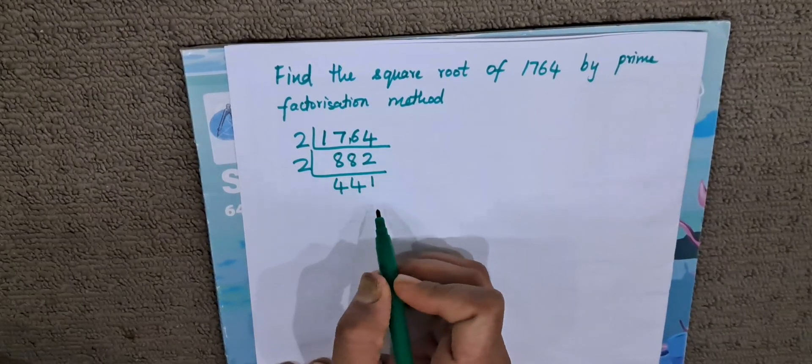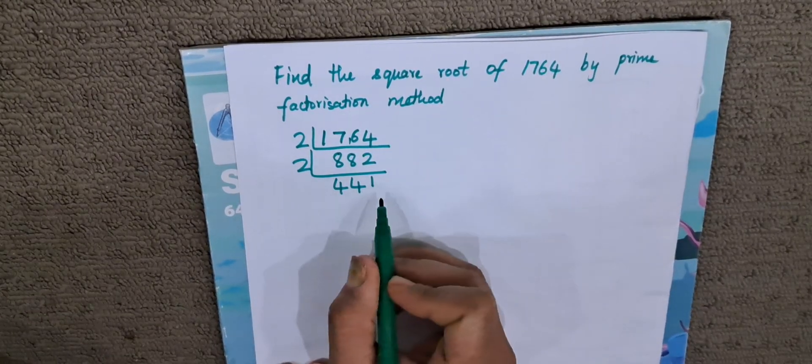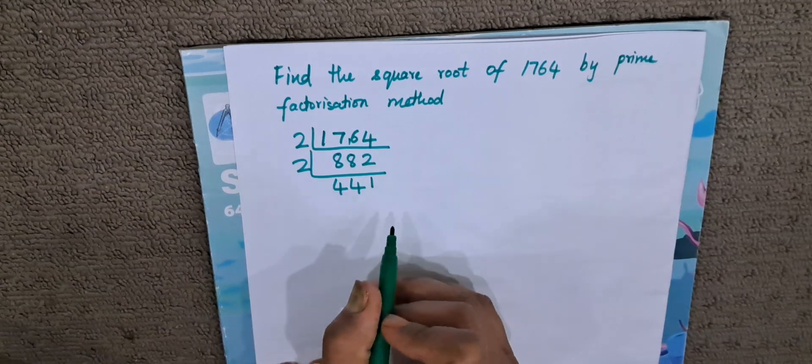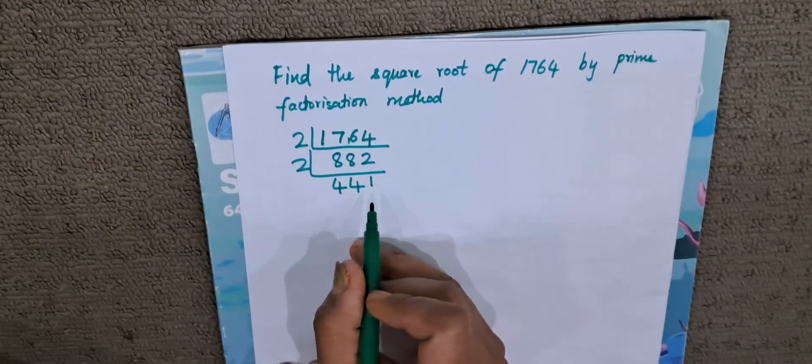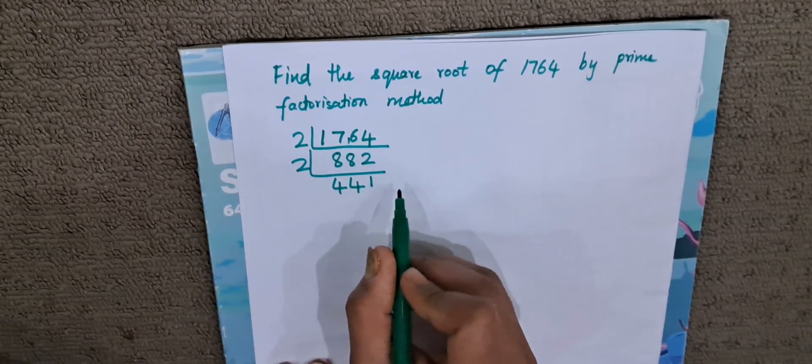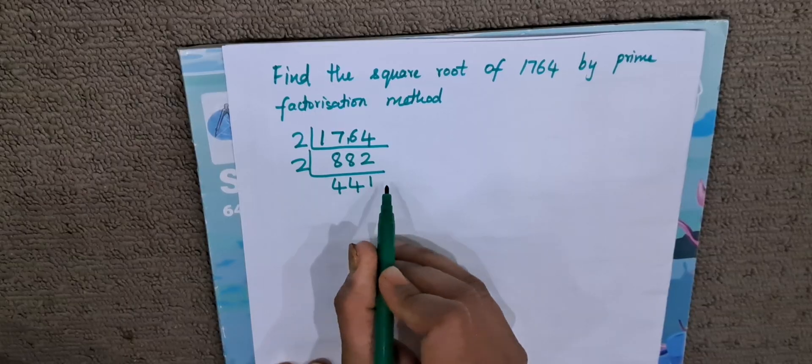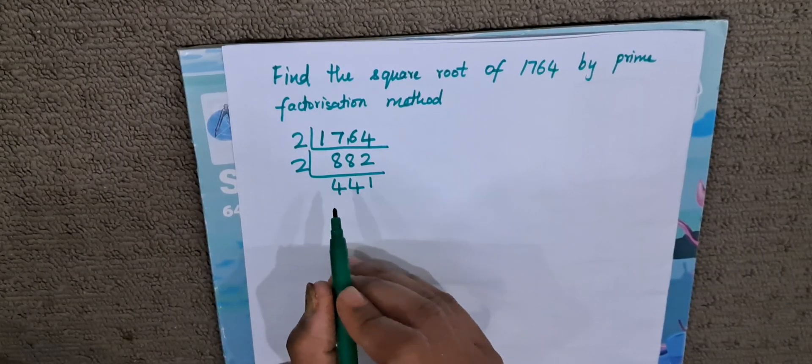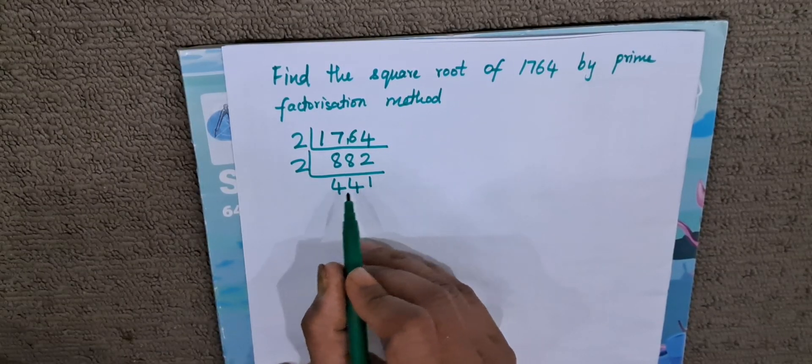Now it is 441. We will check if 441 is divisible by 3. To check if any number is divisible by 3, we will add all the numbers together. 4 plus 4 is 8 plus 1 is 9.